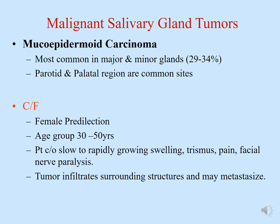Moving on to malignant salivary gland tumors: the most common malignant tumor in both major and minor salivary glands is mucoepidermoid carcinoma. It accounts for 29 to 34 percent of all salivary gland tumors. The most common sites are the parotid and palatal regions. So if a patient presents with a swelling in the palatal or parotid region with suspected malignancy, mucoepidermoid carcinoma is number one on the list.